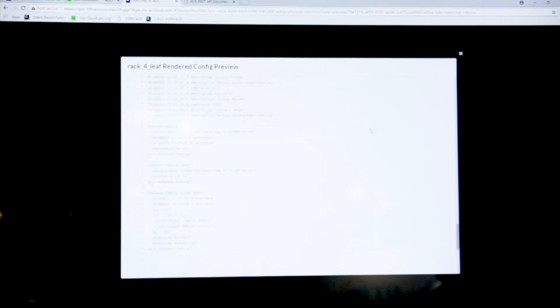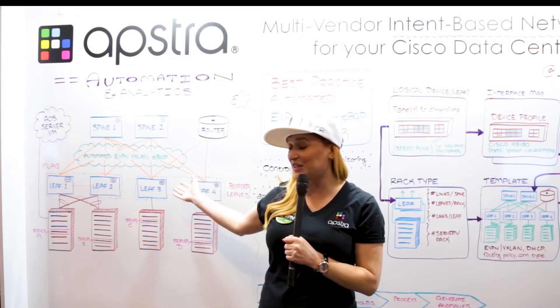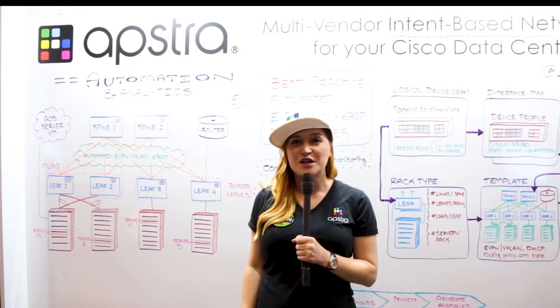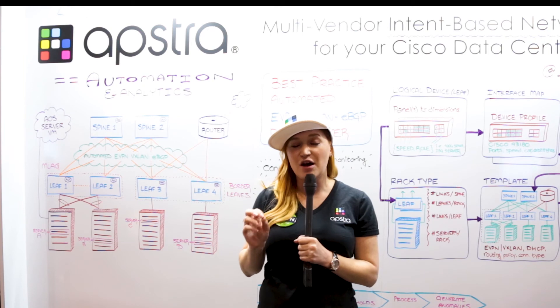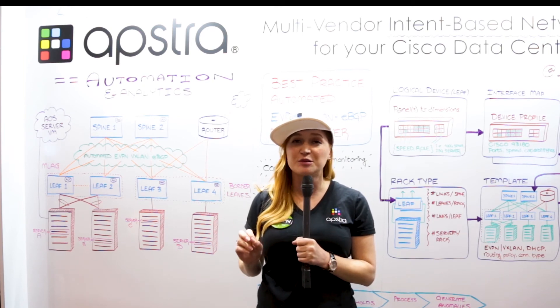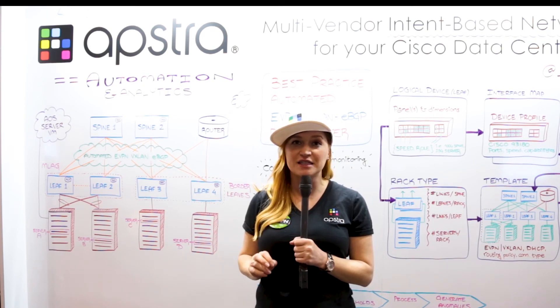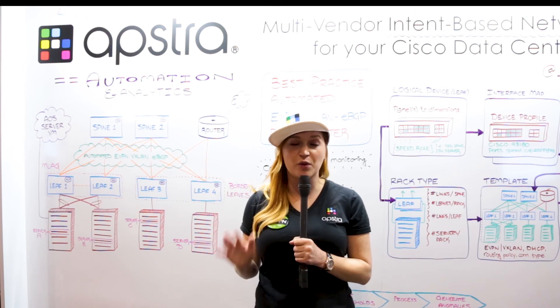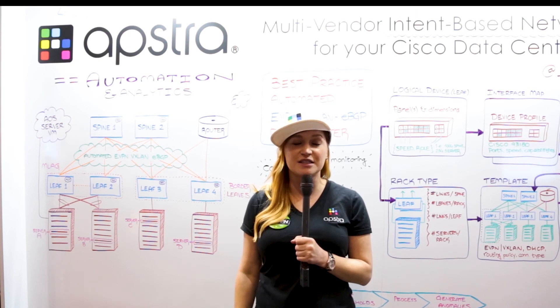This is stuff that would be hundreds of lines of configuration on who knows how many devices. Most data centers are a lot larger than this. So the automation is key — this is stuff that we were doing on a box-by-box basis. It's time to start treating the network like a system, and the way that we manage that system is automation with AOS.